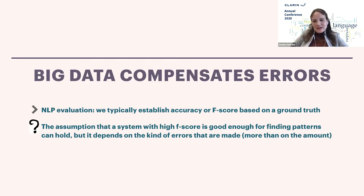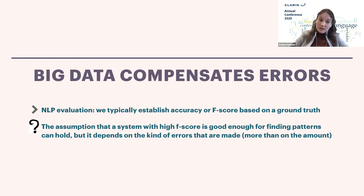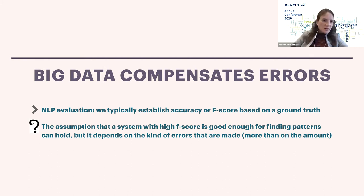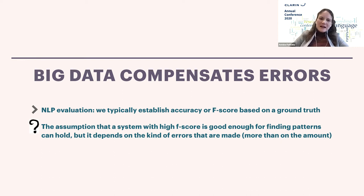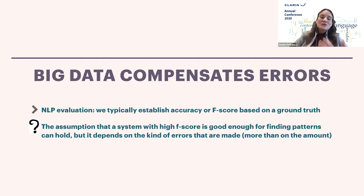On the claim that data compensates for errors: in NLP we typically establish accuracy or F-score based on a ground truth and report it. The idea is that if you have a decent F-score, the errors are just noise. That can be true in many cases — patterns extracted from large data may still hold and can be used to verify hypotheses. But it depends more on what kinds of errors are made than on the number of errors. Whether those errors matter depends entirely on what the person using the tool's output is actually doing with it.